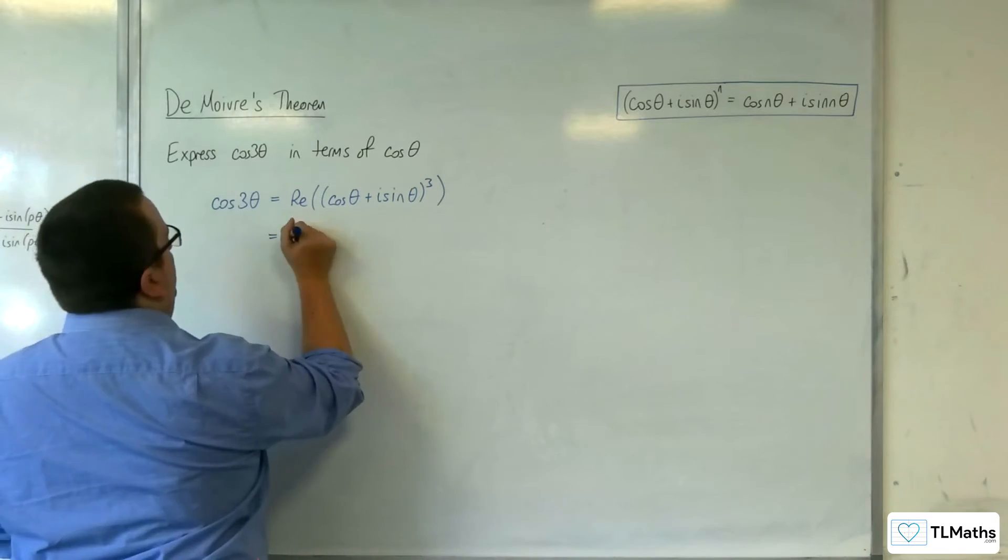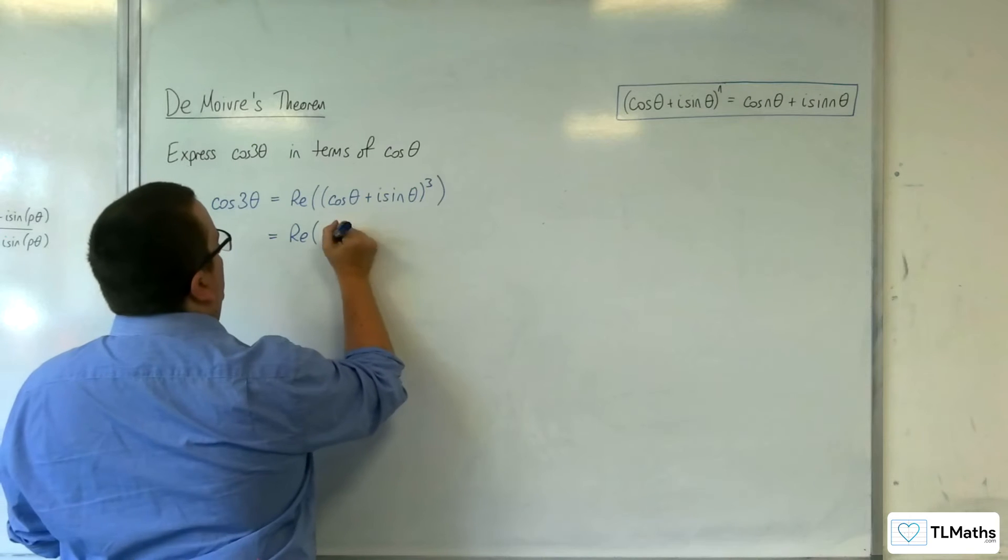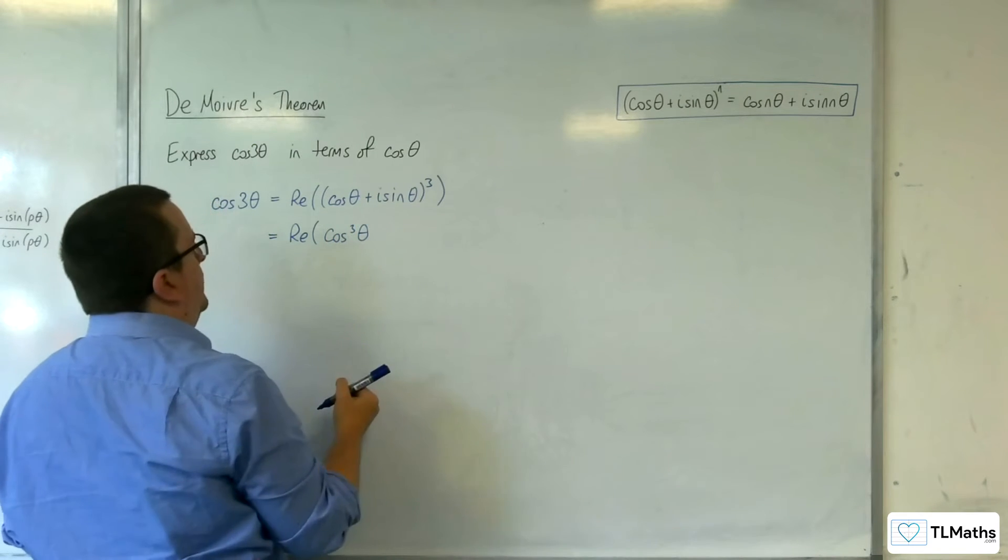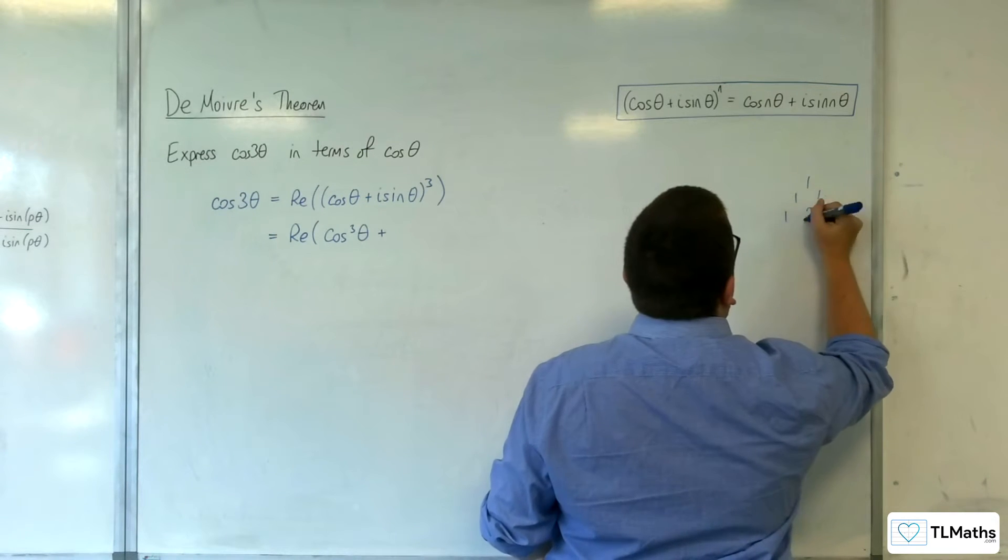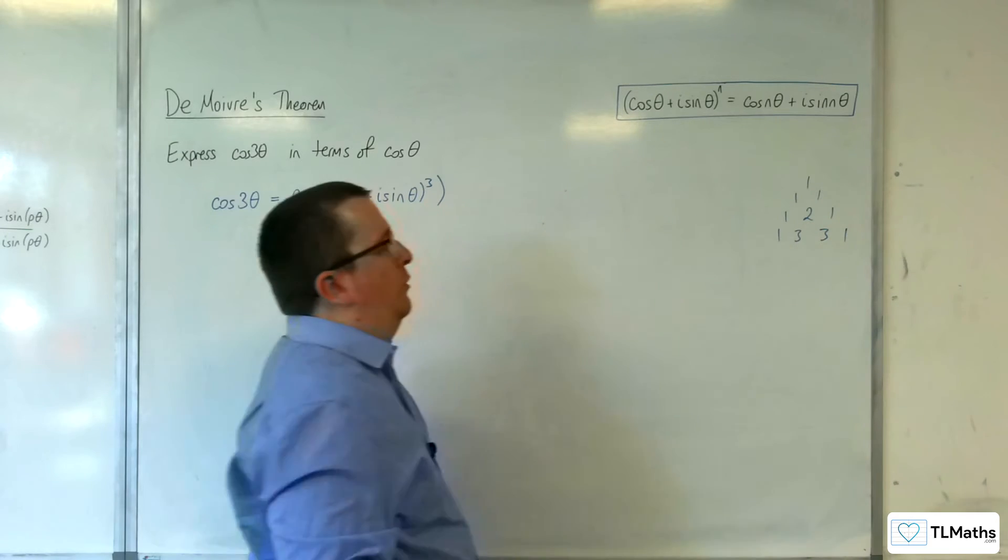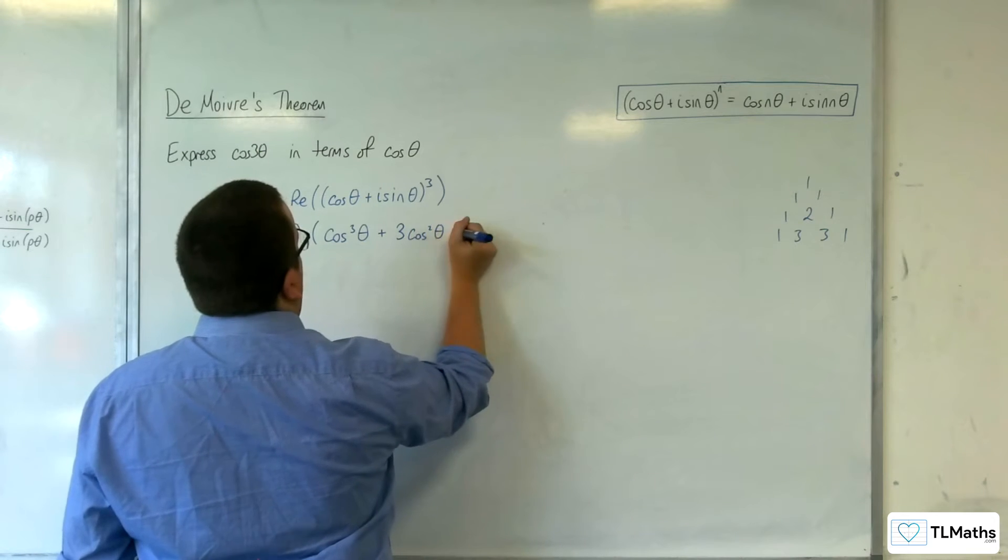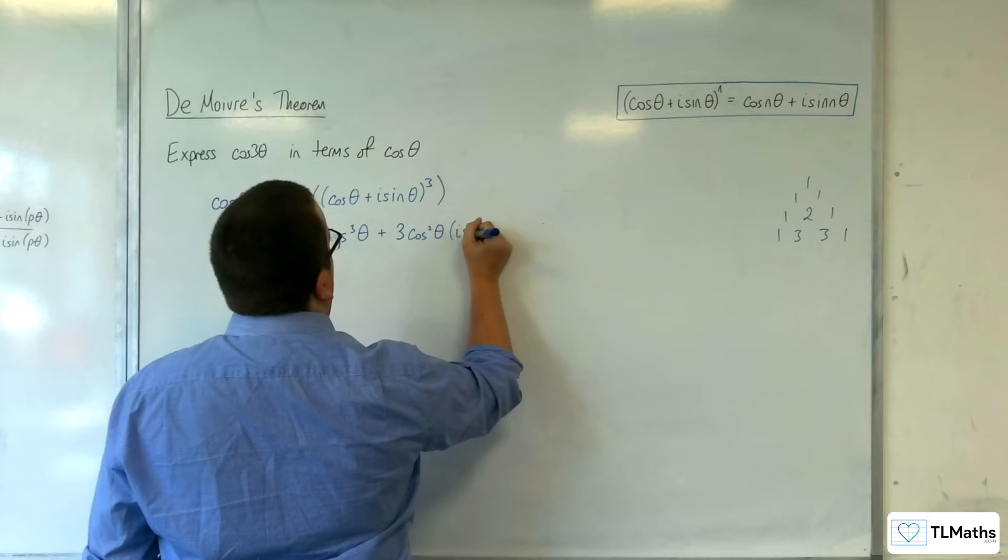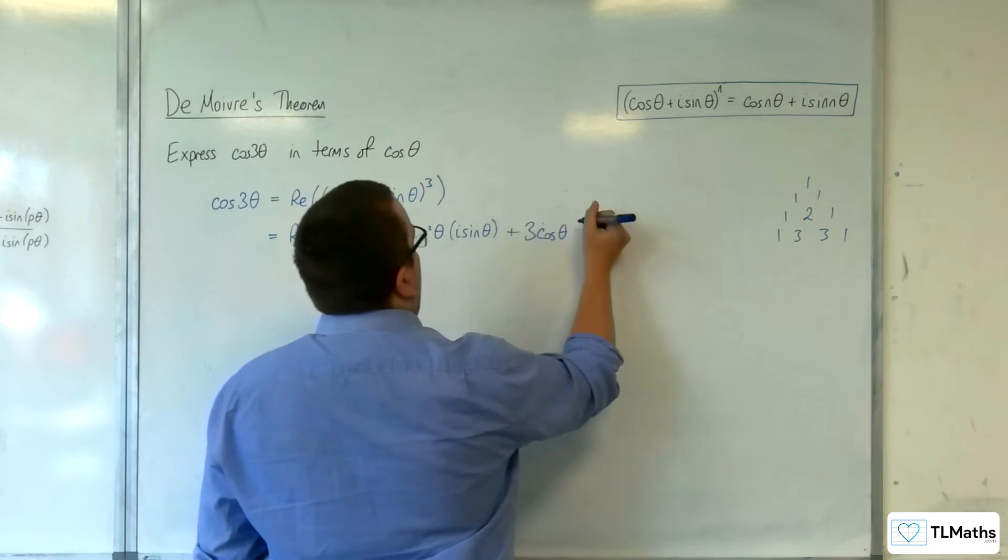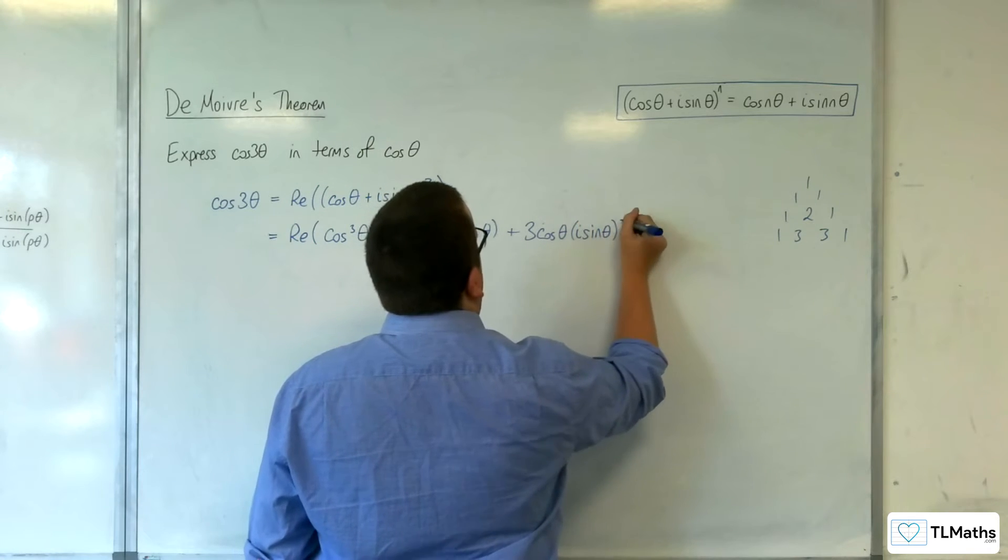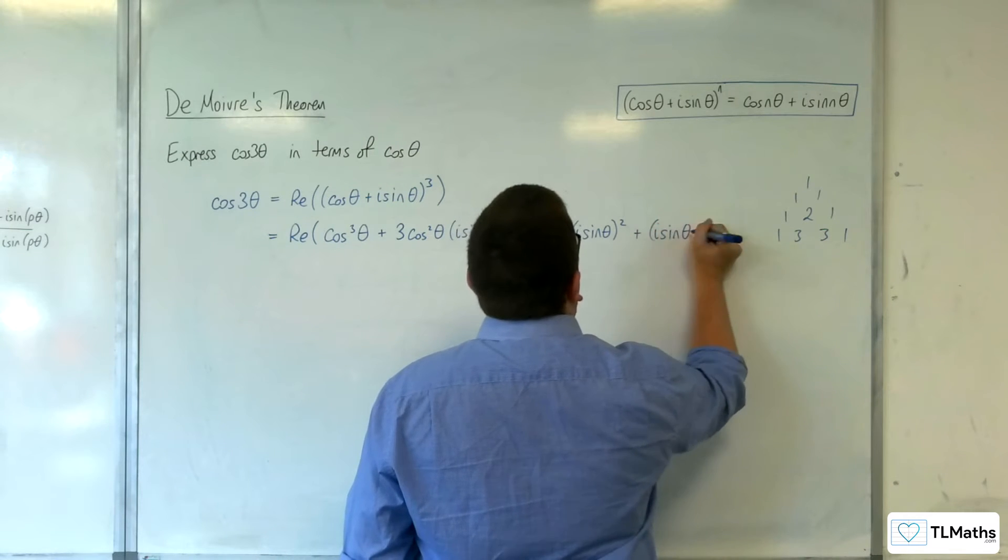So we're going to need to expand this. We can use binomial expansion to do that. Looking at Pascal's triangle, 1 3 3 1, we're going to get cosine cubed theta plus 3 lots of cosine squared theta times i sine theta plus 3 cosine theta times i sine theta squared plus i sine theta cubed.